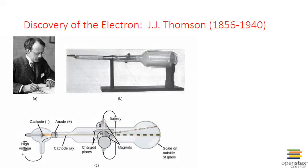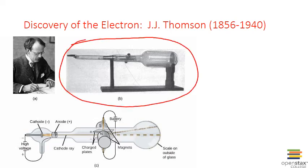The first subatomic particle discovered was the electron. The discovery was made by the English physicist J.J. Thompson in the late 1800s. At the time there was a lot of interest in a phenomenon known as cathode rays that were produced in cathode ray tubes. These tubes are just sealed glass containers that have had most of the gas pumped out of them, so low pressure gas inside.